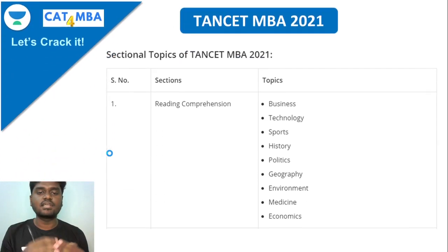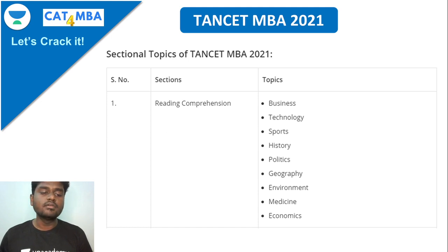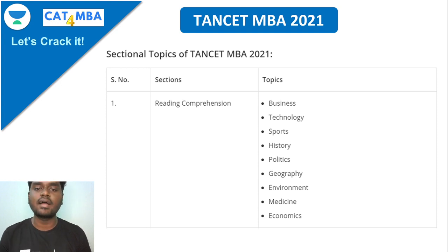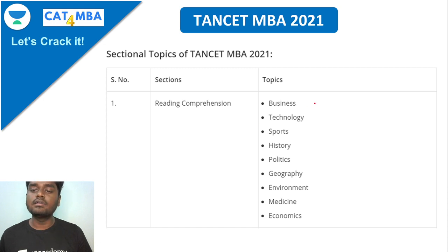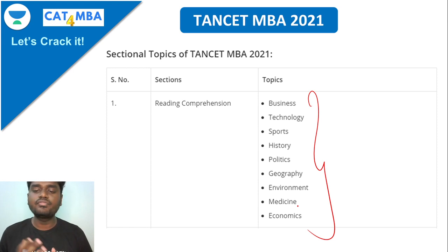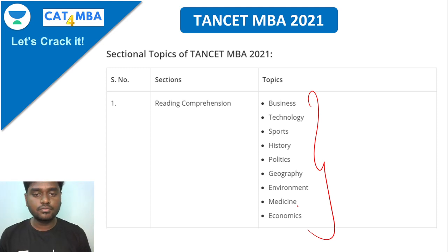The first section is Reading Comprehension. You will be given a passage and you need to go through it in a single read — do not go for multiple reads, as that takes too much time. Time is an important factor that directly influences your raw score in Tancet MBA. Comprehension topics will be related to fields such as business, technology, sport, history, politics, geography, environment, medicine, and economics.